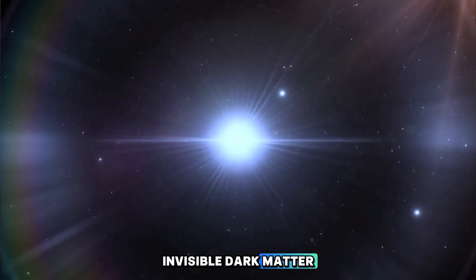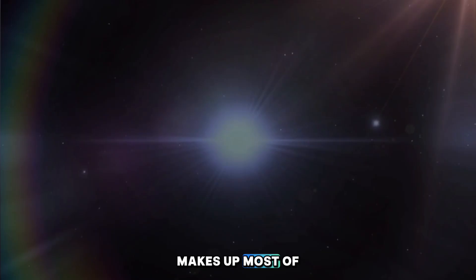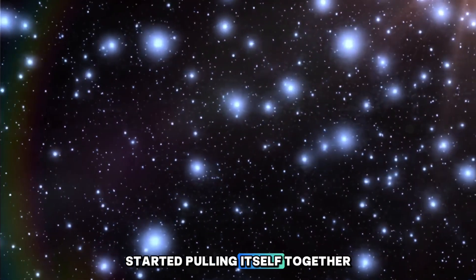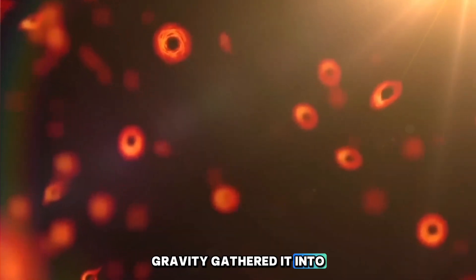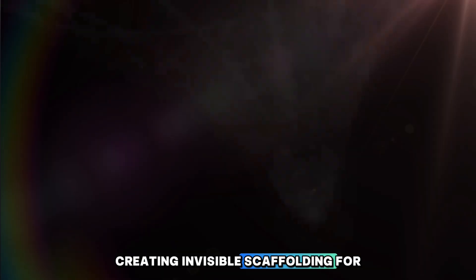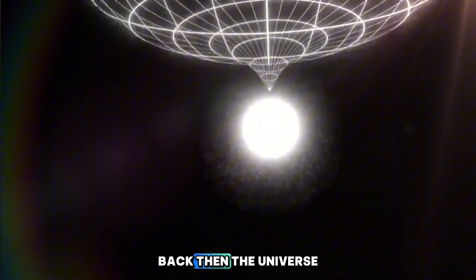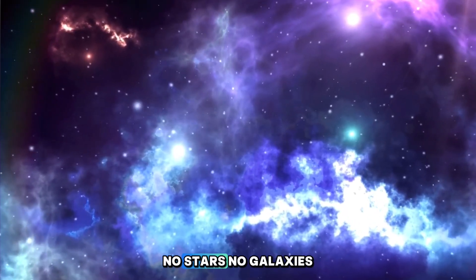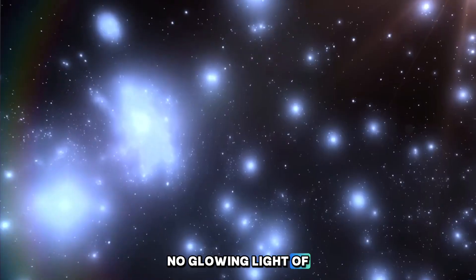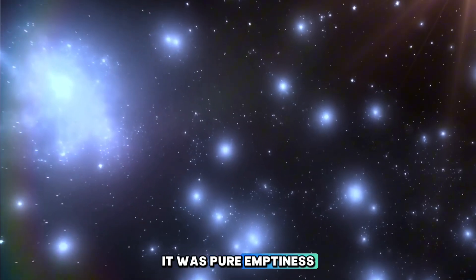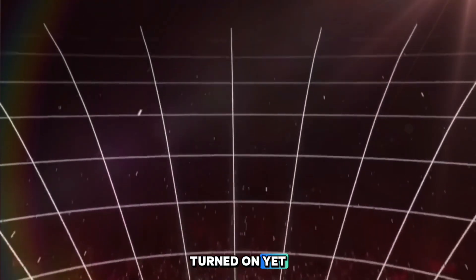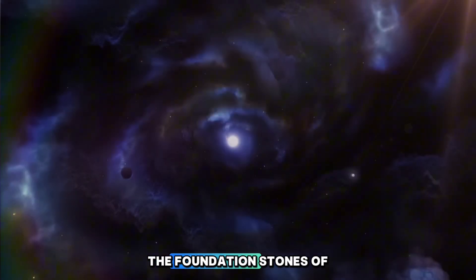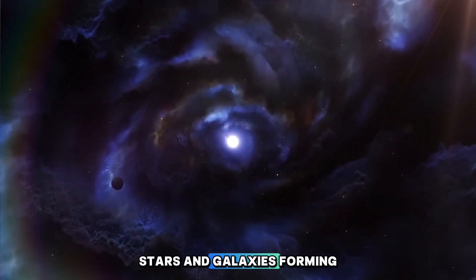Invisible dark matter, the mysterious substance that makes up most of the universe's mass, started pulling itself together long before anything ever shined. Gravity gathered it into massive clumps, creating invisible scaffolding for everything that would come later. Back then, the universe was completely dark. No stars, no galaxies, no glowing light of any kind. It was pure emptiness preparing for something extraordinary. The stage was set, but the lights hadn't turned on yet. This silent era was when the raw ingredients of creation were quietly assembling. The foundation stones of stars and galaxies forming in secret.